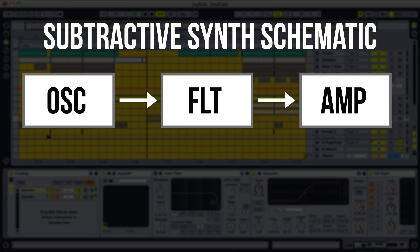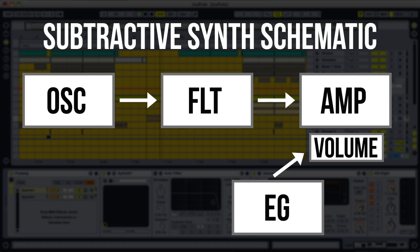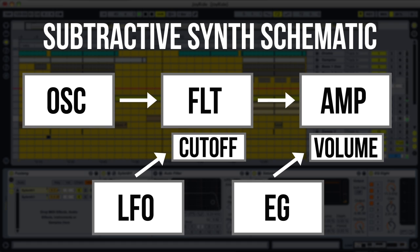We also have a few ways to modulate the parameters of these components. The most common ways are using an envelope generator or a low frequency oscillator. These generate values that can be sent to any parameters of the synth, including volume and filter cutoff, as I've shown here. I'll get to these in more detail in a minute.